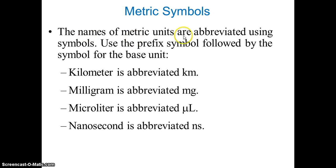So the names of metric units are abbreviated using symbols. Use prefix symbol followed by the symbol of the base unit. For example, kilometer is abbreviated km. K stands for kilo, m stands for meter.